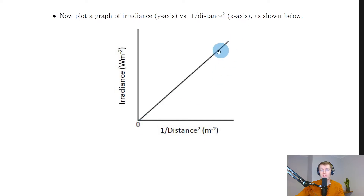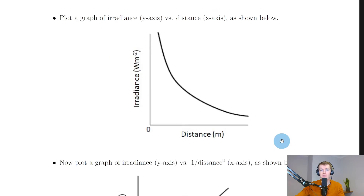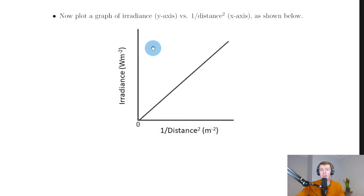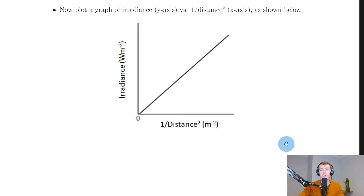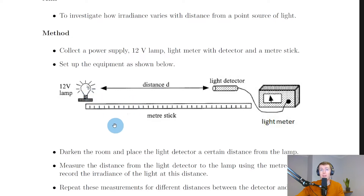By plotting irradiance against one over distance squared you should obtain a straight line through the origin. A straight line through the origin means the two variables are directly proportional — so irradiance is directly proportional to one over distance squared. If you get an offset from the origin, that indicates a systematic uncertainty, suggesting background light in the room is interfering with your results.